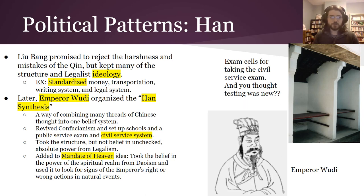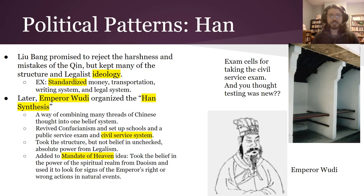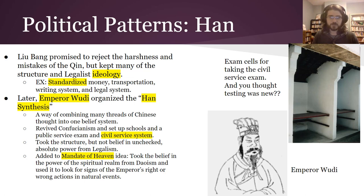The Han Dynasty had some different political patterns. Liu Bang, who had revolted against the oppressive Qin, said he was going to reject all the harshness and mistakes of the Qin — but actually kept many of the structures and legalist ideologies. For example, all the standardized money, transportation, writing systems, and legal systems were made the same across the whole empire to keep everybody on the same page.